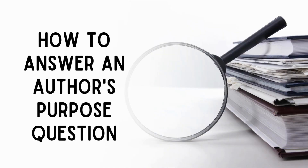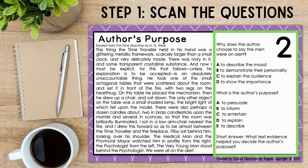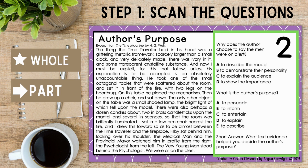Now let's work through a few author's purpose questions. Step one: scan the questions. Is the question a whole question, which requires information from throughout the entire passage to answer? Or is it a part question, where students will need to return to only one section of the text? Let's look at the first question: why does the author choose to say the men were on alert? This is a part question since you will need to return to the section discussing the men being on alert.